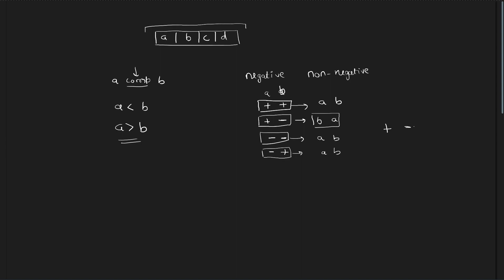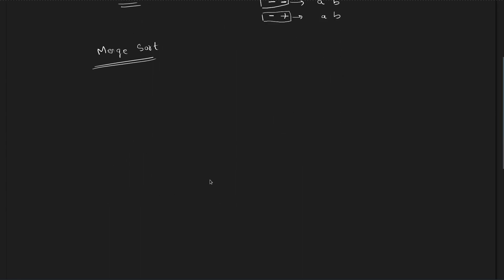Now we know the criteria for our sorting mechanism. The next thing is how do we sort our array. You can use any effective technique such as merge sort. Merge sort will be very effective in these kinds of situations. I believe you already know merge sort. If you do, you can skip a little part of this video, because I'm going to explain it in a little detail for those who don't.